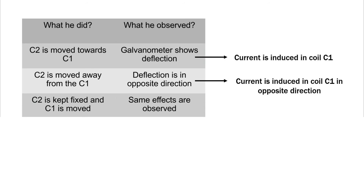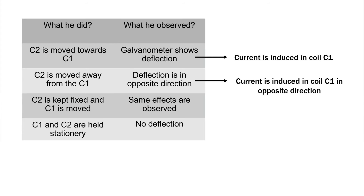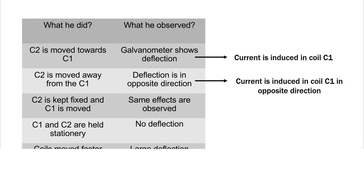At the third time, if coil C2 is held fixed and coil C1 is moved, the same effects are observed. At the fourth time, both coils are held stationary and there is no deflection in the galvanometer — meaning as long as there is relative motion between C1 and C2, current is induced in C1, and when they are at rest, no current is induced.